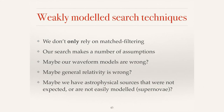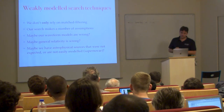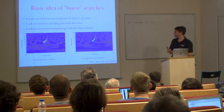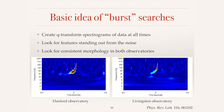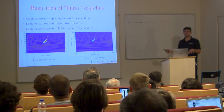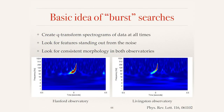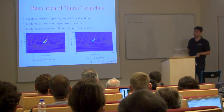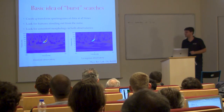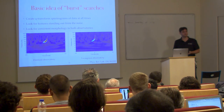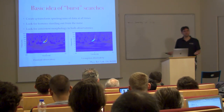We don't only rely on match filtering. Our match filtering searches make several assumptions — what if waveform models are wrong, or general relativity is wrong, or there are unexpected astrophysical sources like supernovae? For these cases we use weakly modelled or 'burst' searches, which create Q-transform spectrograms and look for features standing out from the noise that are consistent across both observatories. Notably, the first search to identify GW150914 was one of these unmodelled searches.